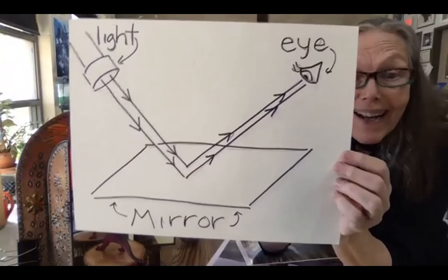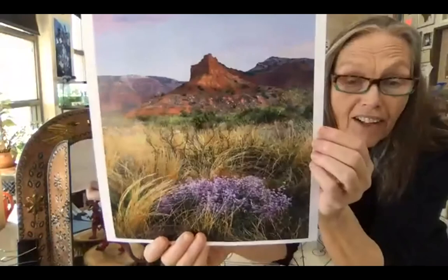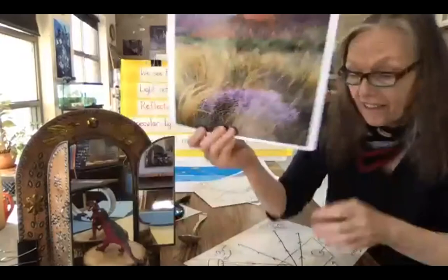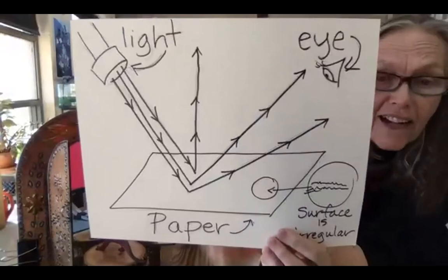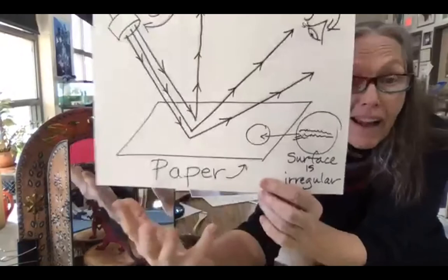Most surfaces are not that smooth. A mountain without a reflective surface in front of it — because there's grass and plants — those are very irregular, so light bounces in all different directions. That's what's happening most around us. Light comes in a straight line, but paper, even if it feels smooth, under a microscope has lots of irregularities, and those cause the light to bounce in different directions.